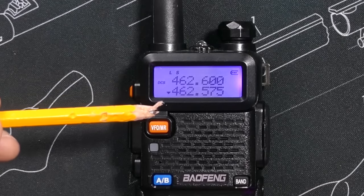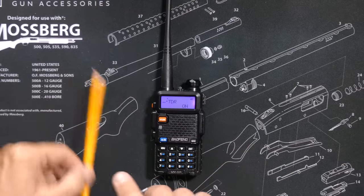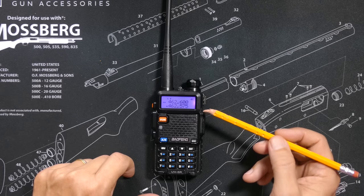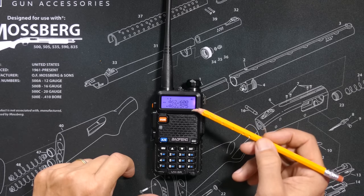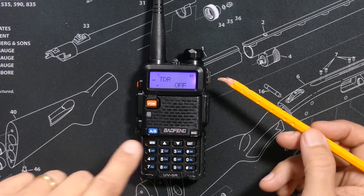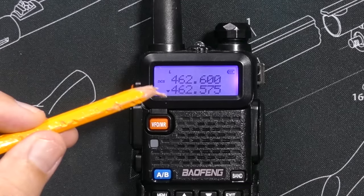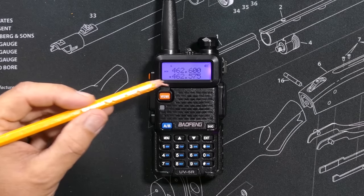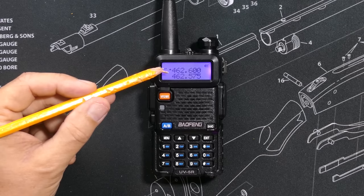Channel A is active now. Channel B is active now. When TDR is set to on, you are listening to both the upper frequency and the lower frequency at the same time, meaning if there are any transmissions on either of these frequencies or channels, you will hear them both. When TDR is set to off, you will only hear transmissions from the active channel, as determined by that little caret or arrow. So right now we would be hearing transmissions on 462.575, and now we're only hearing transmissions on 462.600.